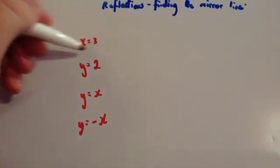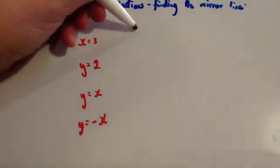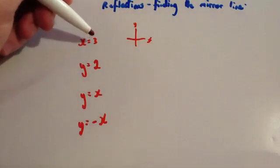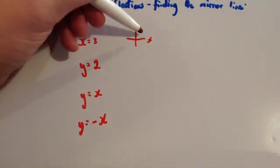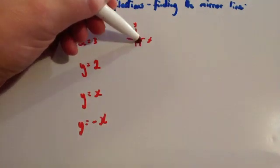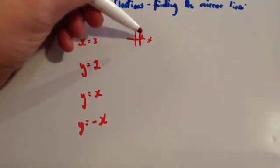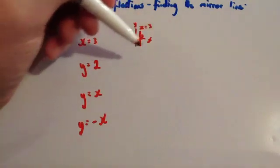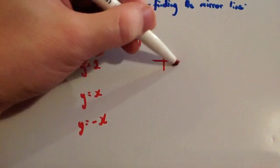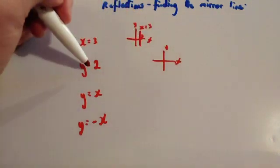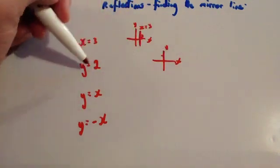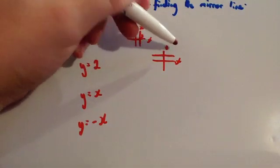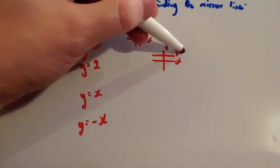So if you were drawing the graph x equals 3, you'd have your x and y axis. Because x equals 3, it means all the horizontal positions are 3, so they go in a straight line through 3 on the x-axis. For the graph y equals 2, it goes through 2 on the y-axis — a horizontal line where all the heights are 2.